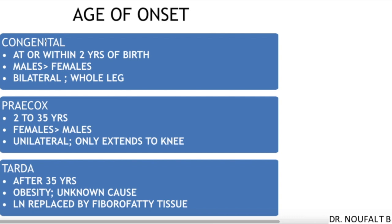Based on age of onset, lymphedema is divided into three types: congenital lymphedema, lymphedema praecox, and lymphedema tarda. Congenital lymphedema occurs at or within two years of birth; males are affected more commonly than females, and it is bilateral with the whole leg affected.